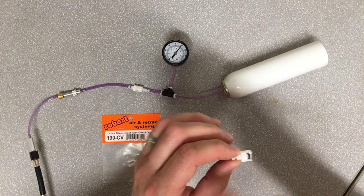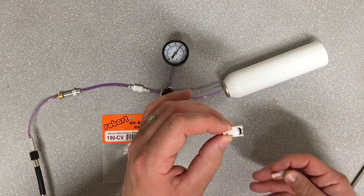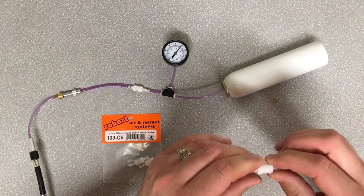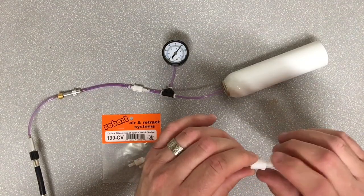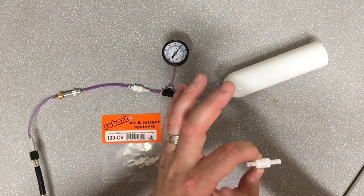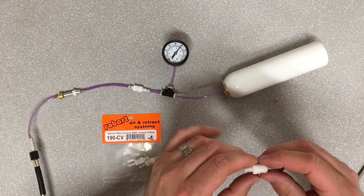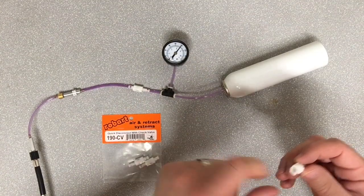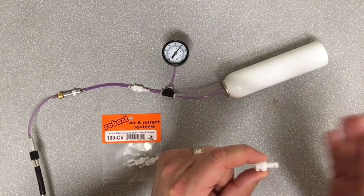This side, the air is free to move back and forth, just like our normal 190s or quick disconnects. A quick twist and your air is free to flow both ways. When disconnected, air flows here but is stopped here.